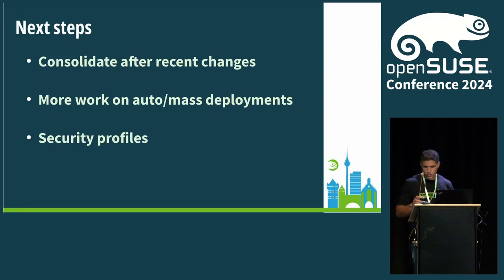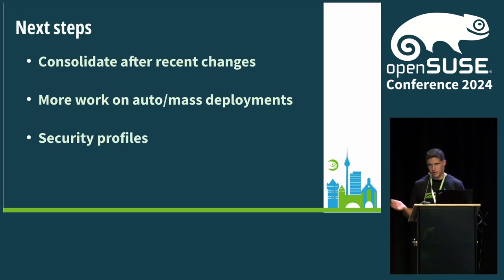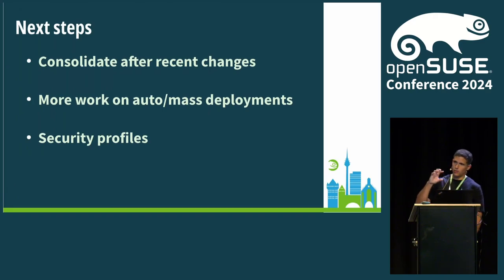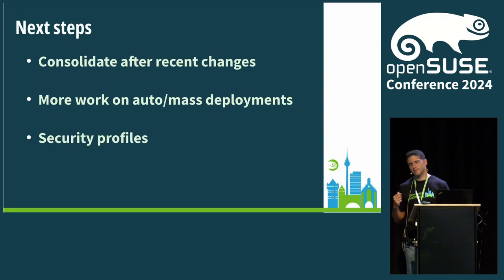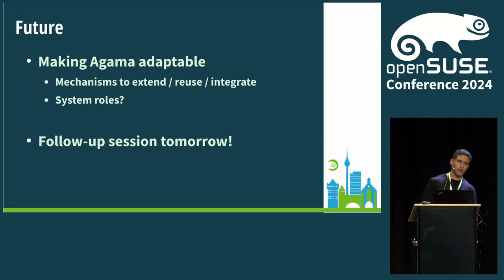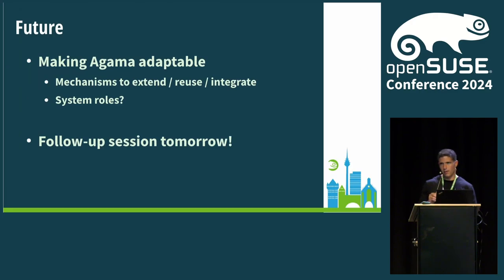For longer-term goals, we actually need more feedback to decide what exactly we want to work on — making Agama more adaptable to other use cases, SUSE products, and OpenSUSE distributions. We need to have those conversations, and again, that's why we are here. We also want to evaluate what to do about system roles, as I mentioned. So I'm inviting everyone to tomorrow's session with Joseph, which will be more interactive with more room for interruptions and dialogue.